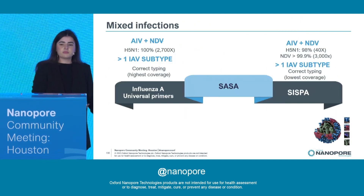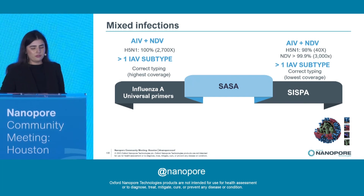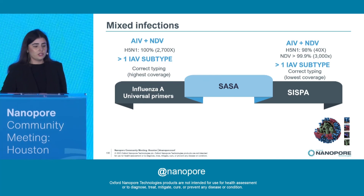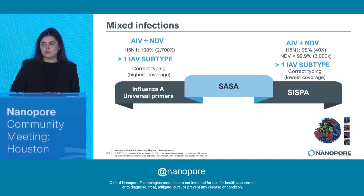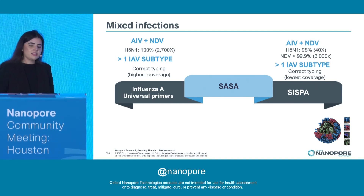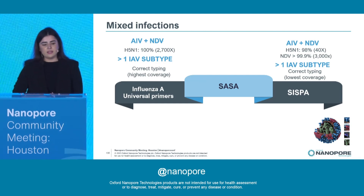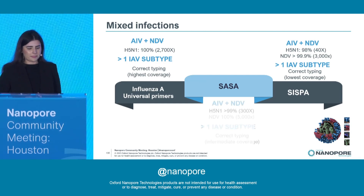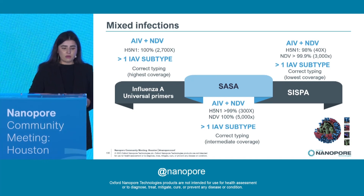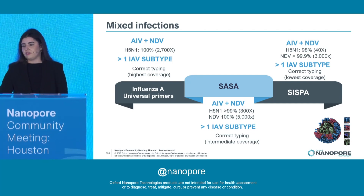How do those different enrichments perform with the mixed infected sample? Starting from the bottom left side, with the universal primers for influenza A, we couldn't sequence the Newcastle disease virus, but we obtained very high coverage for H5N1, as well as correct subtyping of different influenza A subtypes with high coverage. On the other hand, on the top right side, with SISPA, we sequenced both Newcastle and influenza, but we had a decrease in coverage for influenza reads and for the different influenza A subtypes. And finally, with our new SASA, we stand in the middle — we sequenced both influenza and Newcastle with very high confidence, as well as correct subtyping of different influenza A, and it still outperformed SISPA when it comes to the identification of influenza.